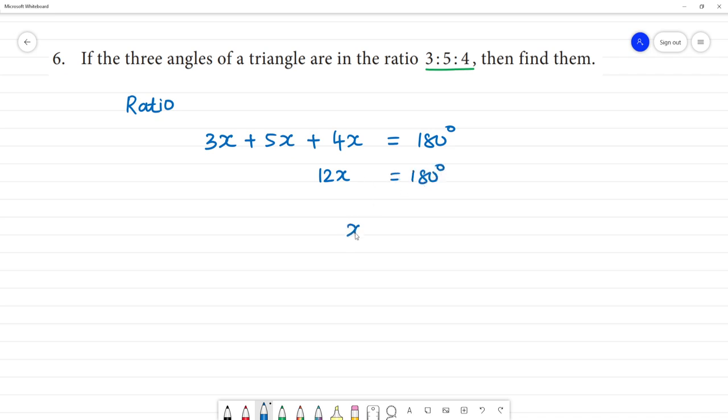Now, x is equal to 180 by 12. So, 180 degree by 12. Divide: 1, 12 is 12, 3 minus 6 is 0, 5, 5, 12 is 16. So, what is the answer? X equal to 15, x is 15.